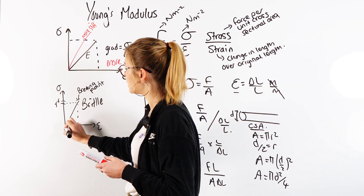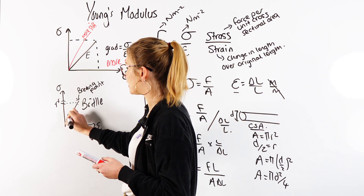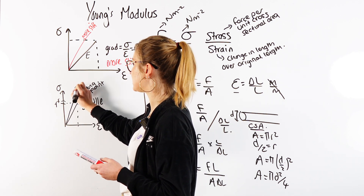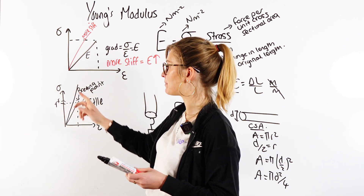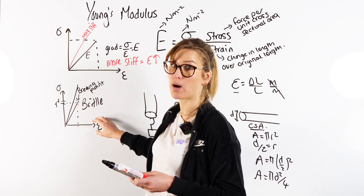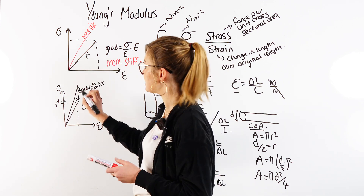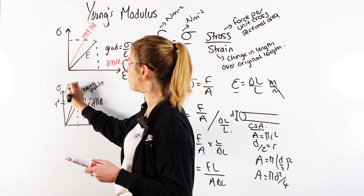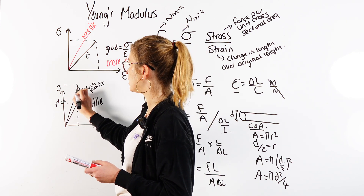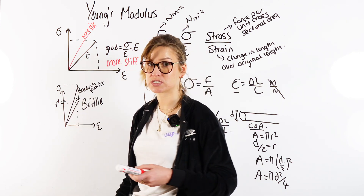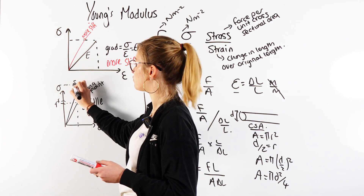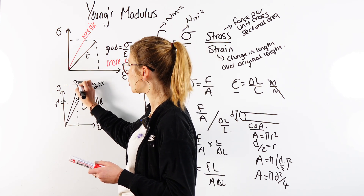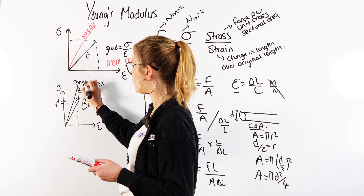If we have another material with a slightly higher Young's Modulus but it's still brittle — still can't be pulled into a thin wire — we can see this one will break under a larger force. So because it breaks under a larger force, this would be the stronger material.